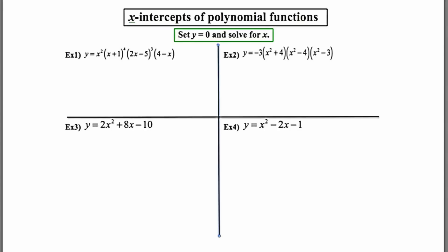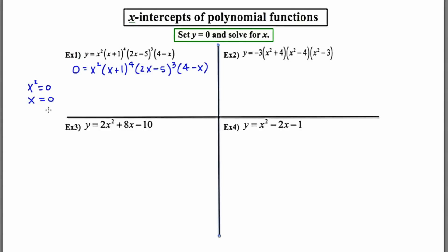Let's go to number one. The first observation I make in number one is that it is in factored form, which is actually the easiest case of all. I'm going to start by setting y equal to zero. Now that I've set y equal to zero, I'm going to take each independent factor and set it equal to zero. I start with x squared equals zero, take the square root of each side, and I get my first x-intercept, which is at x equals zero.